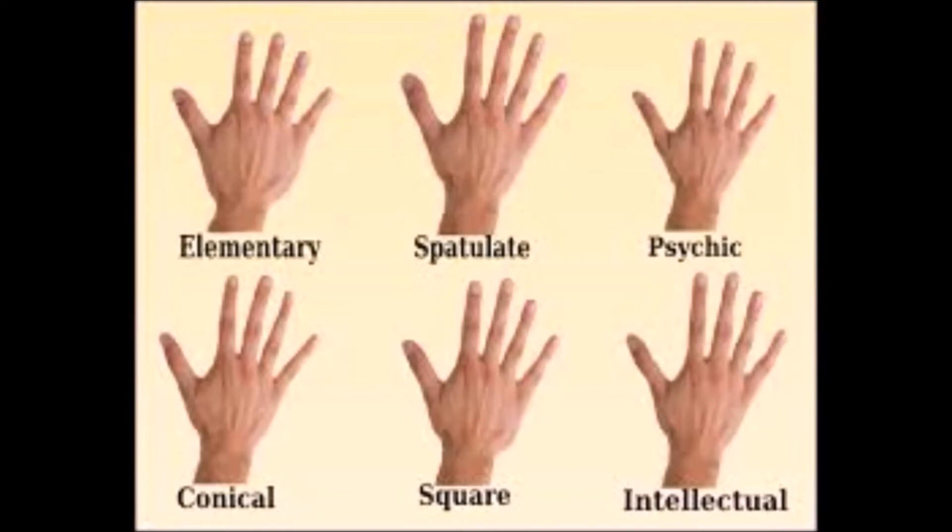The mixed hand. Most hands are mixed. The square hands may have two or three different types of fingers. The spatulate may have only two or so that vary. It is necessary to analyze the fingers carefully, then combine the findings.